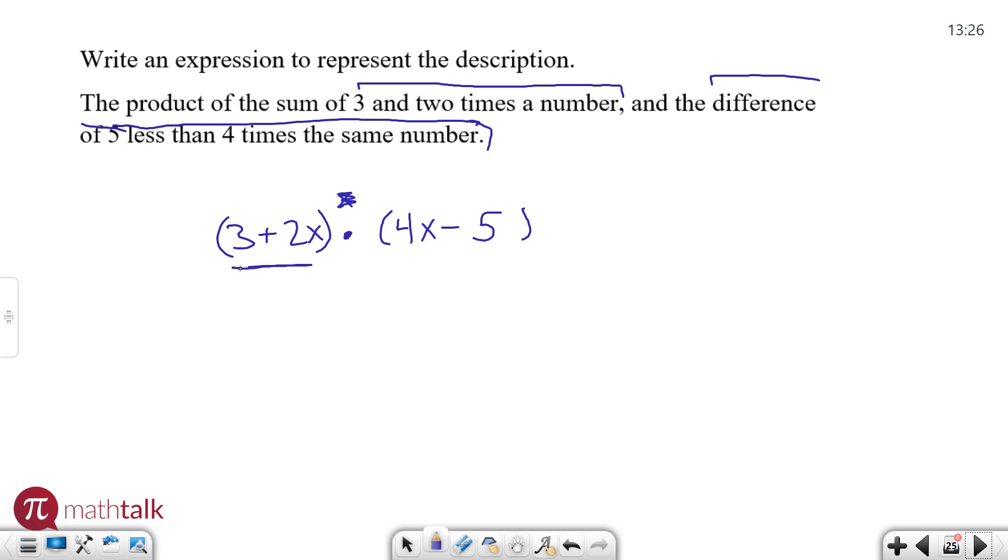So now I have my two quantities that I'm multiplying together, finding the product of. I have the sum of three and two times the number, and then I have the difference of five less than four times the number, and I'm finding the product between those two represented by the dot or you can use a multiplication symbol. So I've put all my words into letters and numbers. My expression is complete. This is actually my final answer. I can check it off and move on to the next problem.